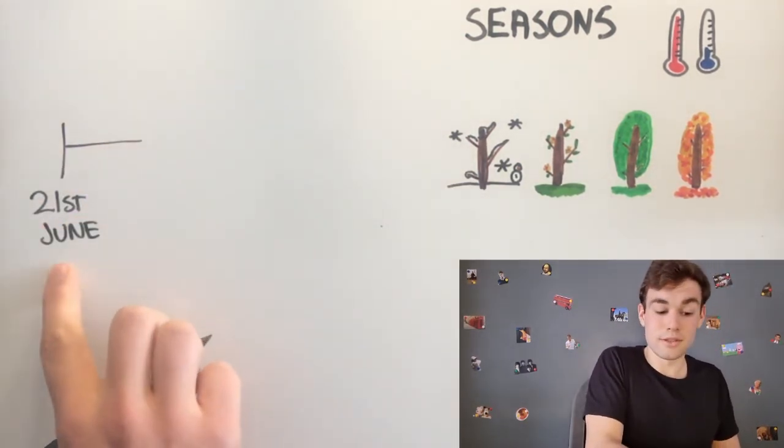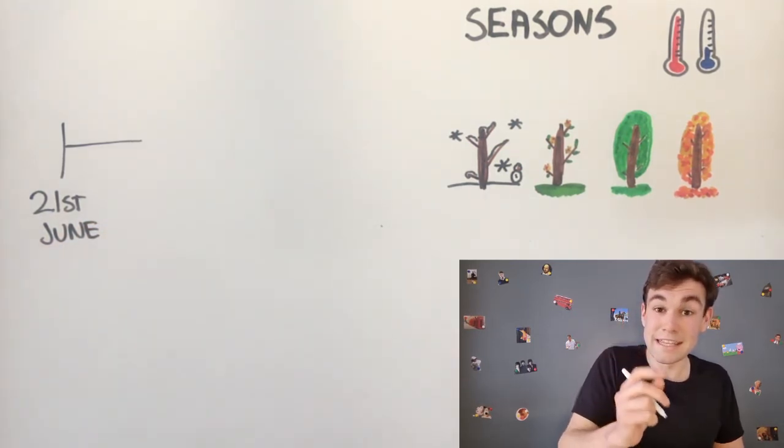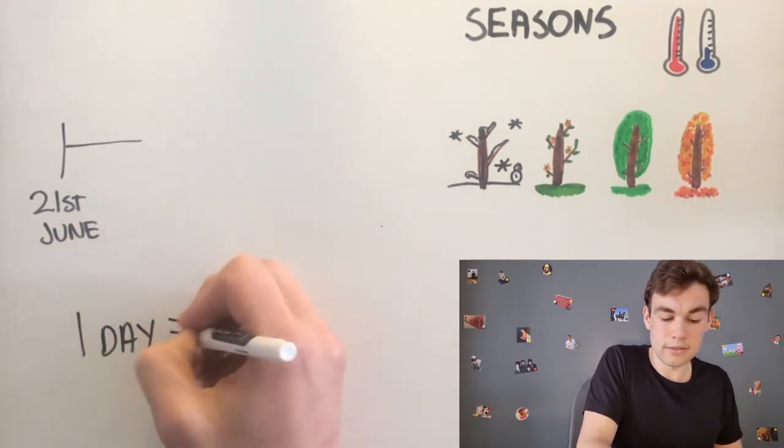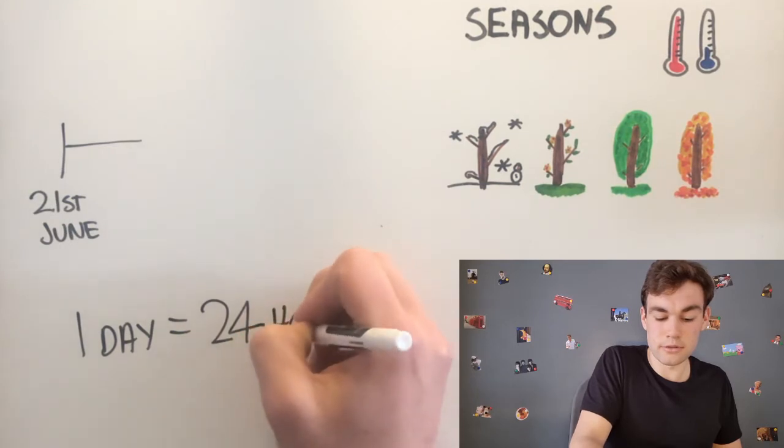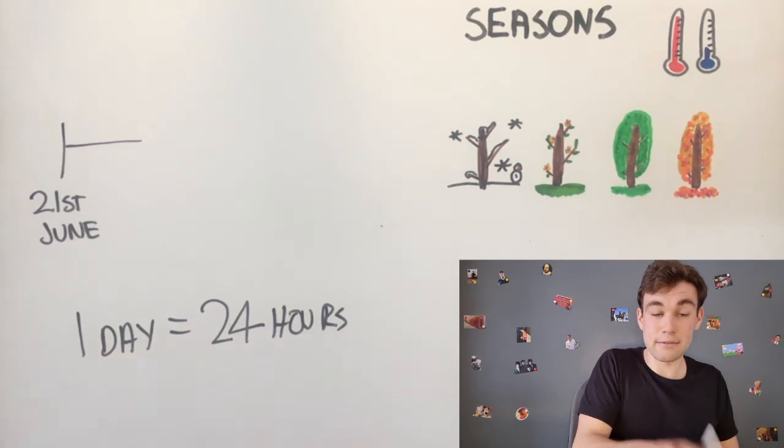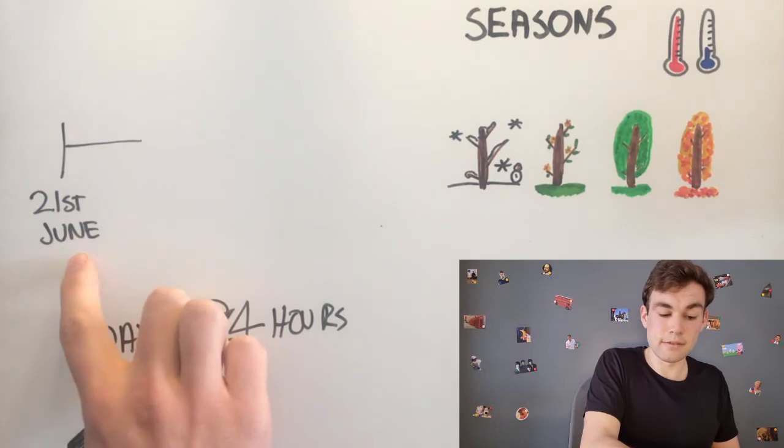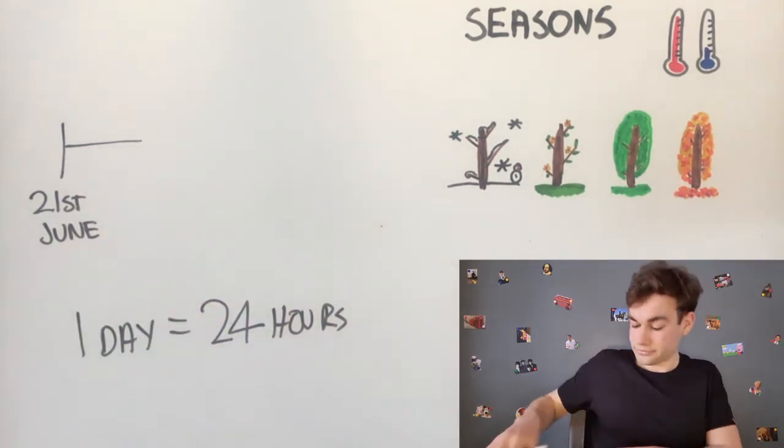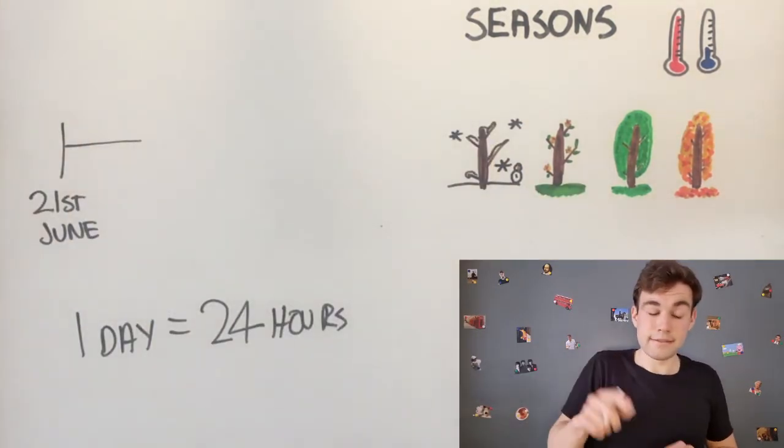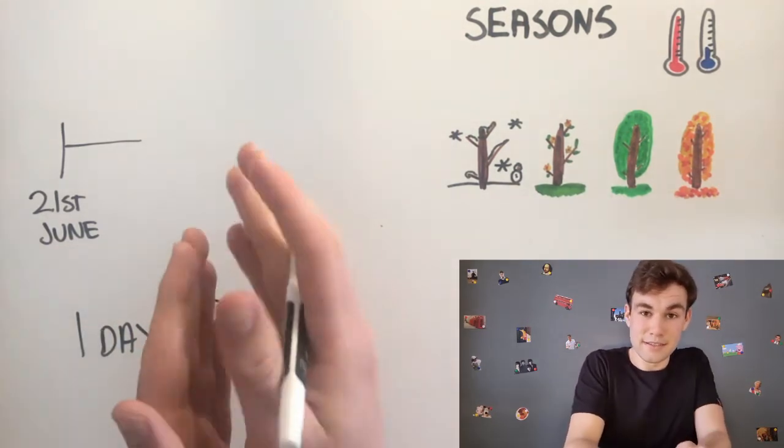The 21st of June is the first day. One day is equal to 24 hours. The first day of summer is the 21st of June in the UK.